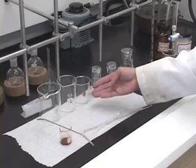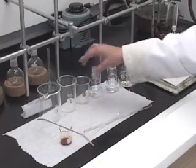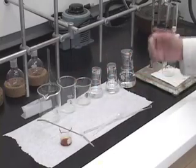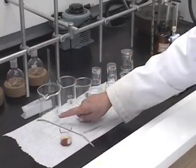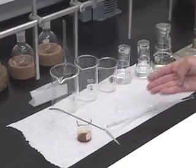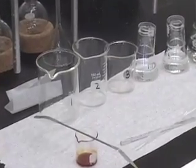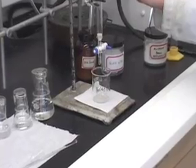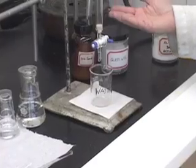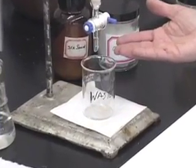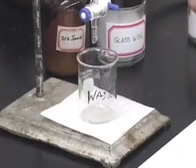These beakers can be of any size as long as they are minimum 100 ml in volume. Label them as 1, 2, and 3 for collecting different fractions. You may also notice that I have a beaker labeled waste here for collecting waste eluted solvent.